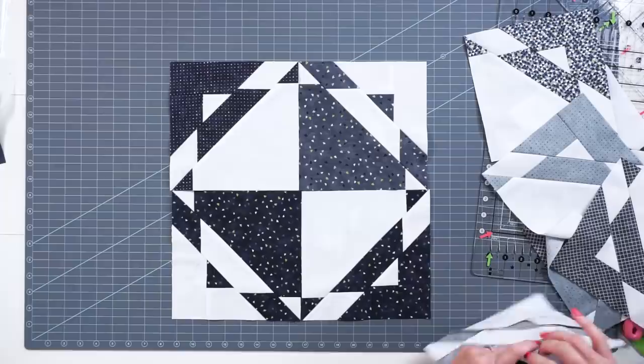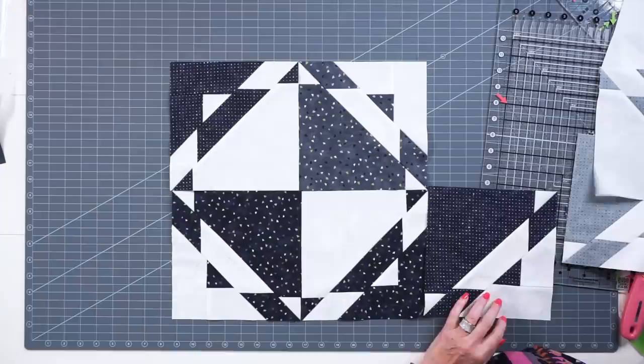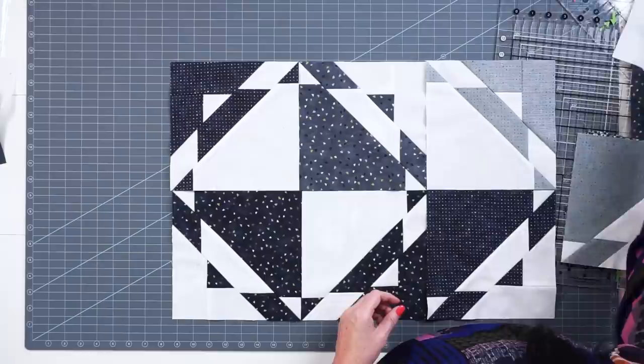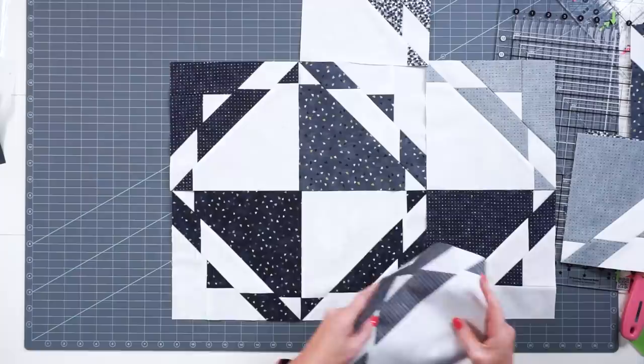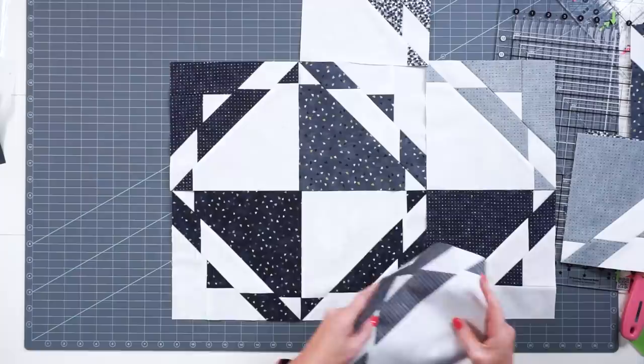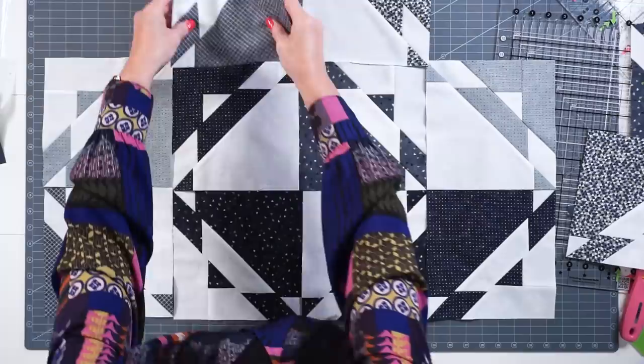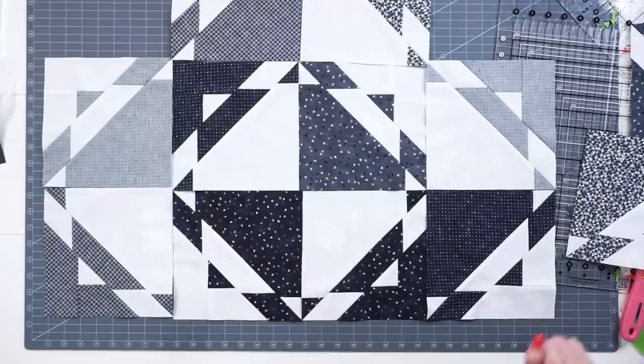Your dark blocks will kind of alternate on this side this way, and then your lights going this way, so you kind of get these rows of light and rows of dark. So you end up getting these rows of dark and rows of light and that'll kind of extend out as you go.